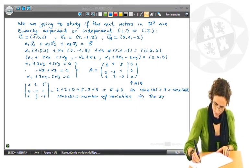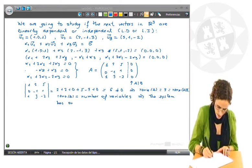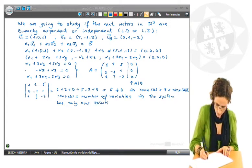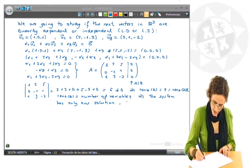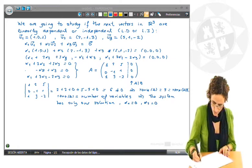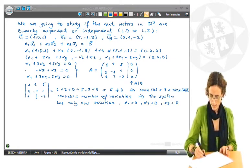rank of A coincides with the number of variables or the number of vectors. So we can conclude that the system has only one solution, which is the null solution, that is to say α1 equals 0, α2 equals 0, and α3 equals 0.